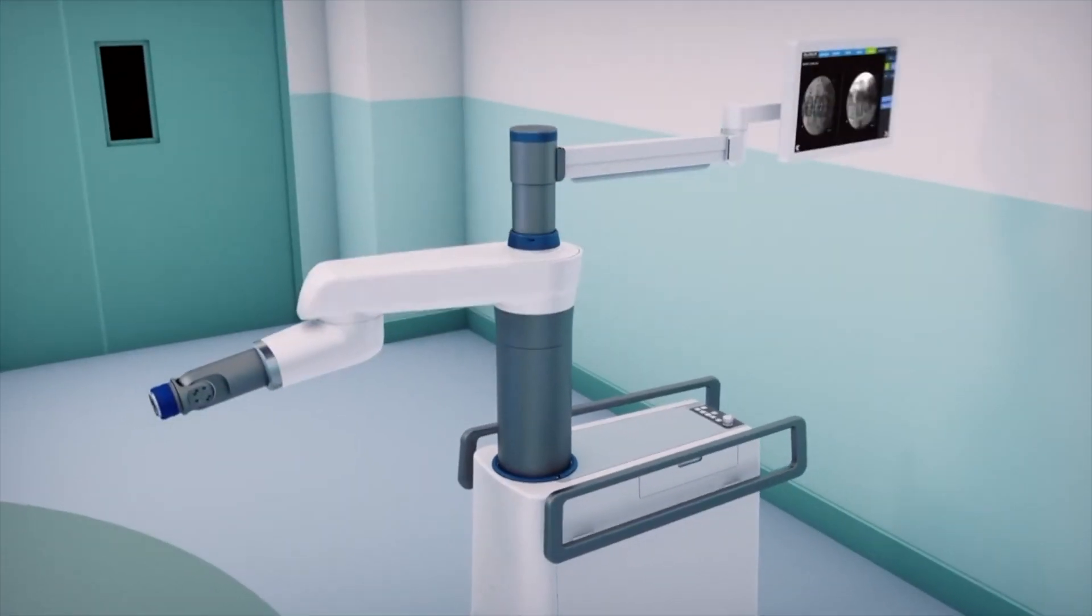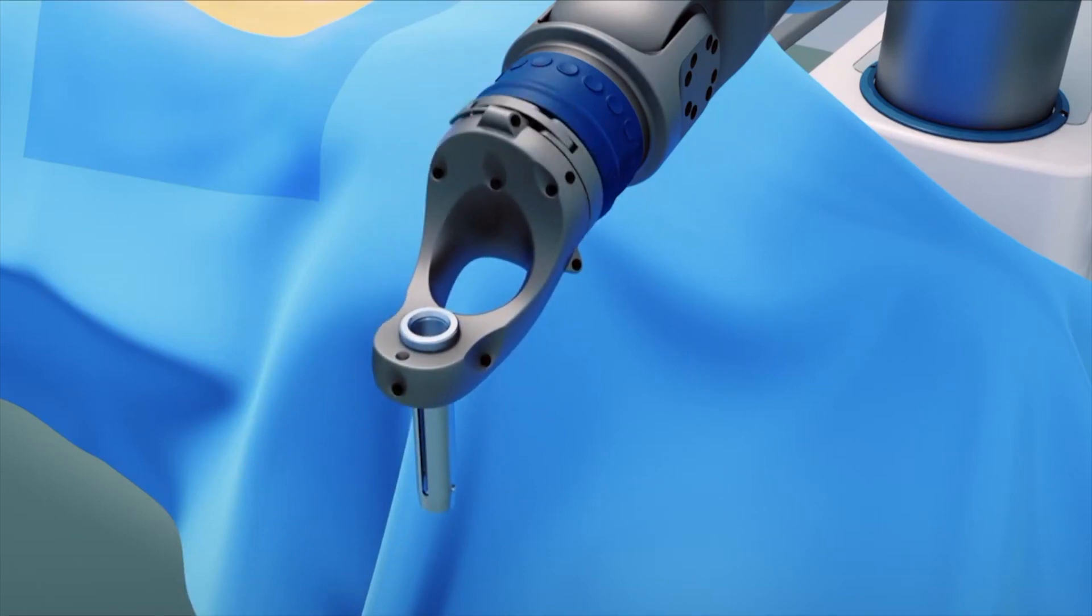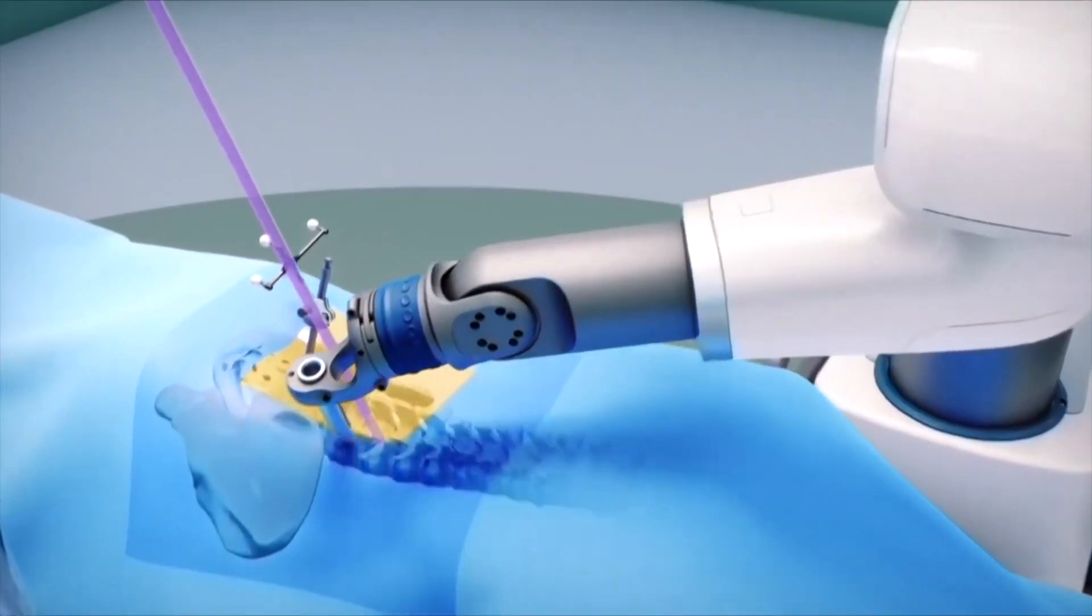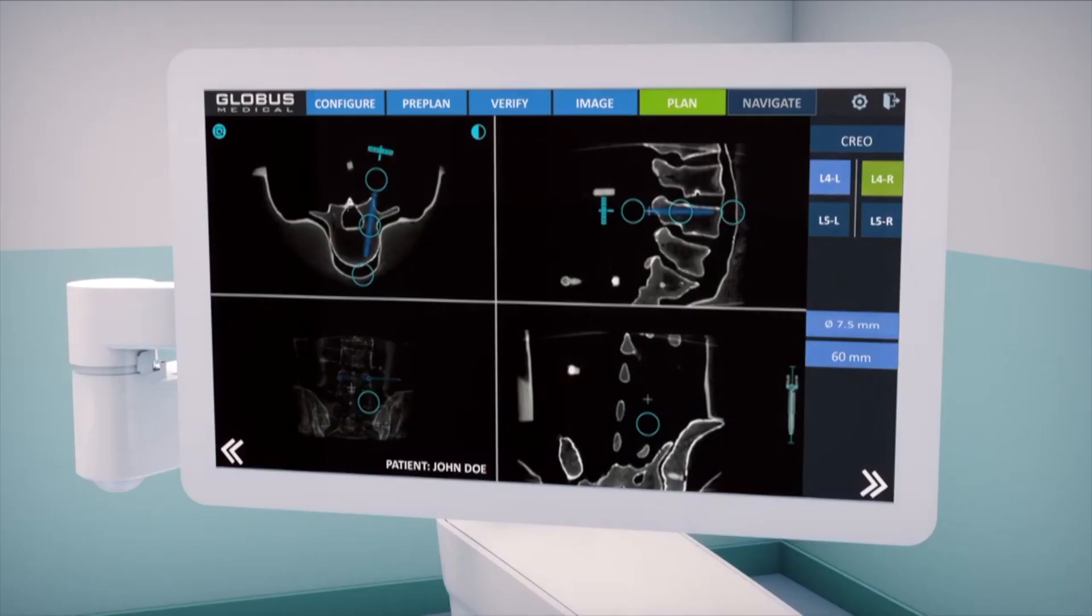Excelsior GPS third-generation spine robotic system uses the rigid robotic arm for the placement of implants in the spine. The implants are planned using CT scans of the patients.